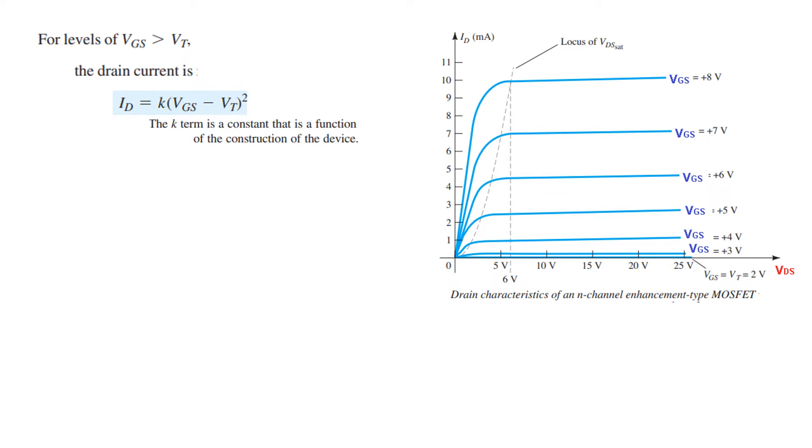Now for the drain characteristics curve, we can say that for level of VGS greater than VT, that means when it starts conducting, the drain current is given by this formula. So in this case Shockley's formula is not applicable, so we are using a new formula. And in this formula the term K is a constant which we have to calculate for each device, which is given from the construction of the device. And from here we can calculate K, which is ID(on), that means when it becomes on, and it is something like IDSS that we have read in JFET. So keep that in mind, divided by (VGS(on) - VT)². So we will see this when we solve problems, we will understand this better.